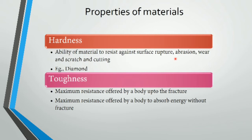The next property is toughness. Toughness is the maximum resistance offered by a body up to the point of fracture. It represents how much energy is absorbed by the material at maximum resistance before fracture.